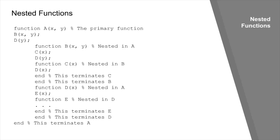Consider a nested function structure where primary function A contains nested functions B and D, B contains C, and D contains E. The calling rules are: a function can call from the level immediately above it (A can call B or D but not C or E); from the same level within the same parent (B can call D and vice versa); from any lower level (C can call B or D but not E); via function handles from any MATLAB function with access; and any nested function can call a sub-function in the same m-file.